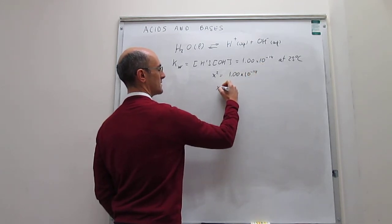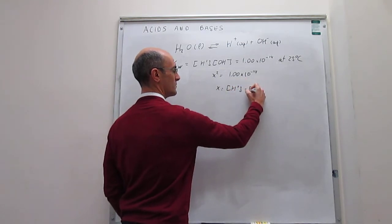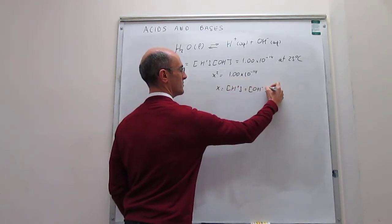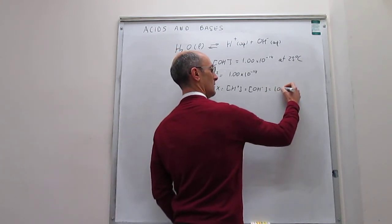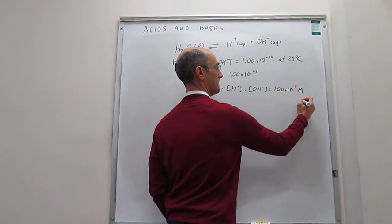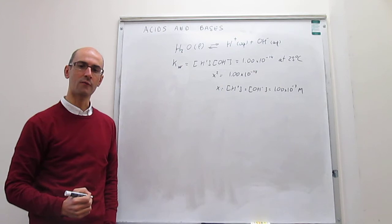And what that means is this x, which is the concentration of protons, and also the concentration of hydroxide, is going to be equal to 1.00 times 10 to the minus 7 molar for each. So these are the acid-base properties of water.